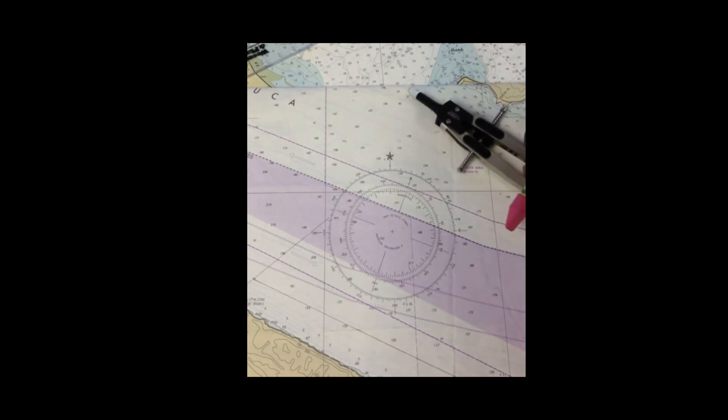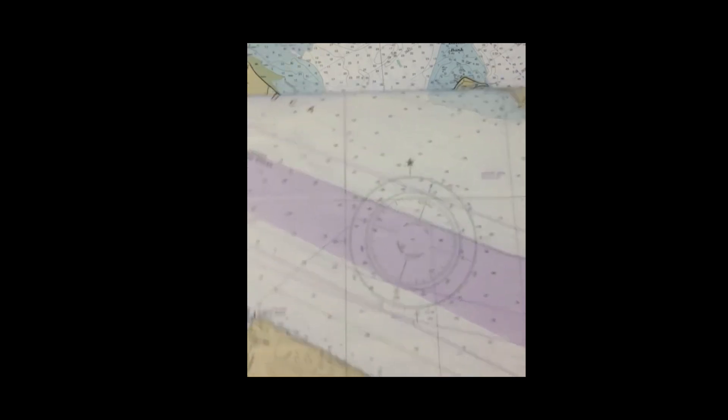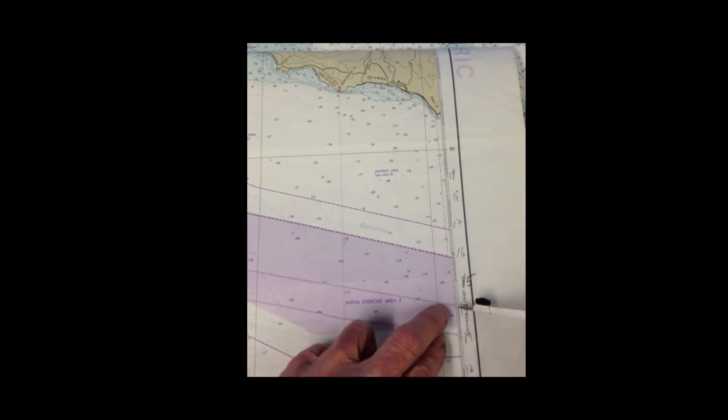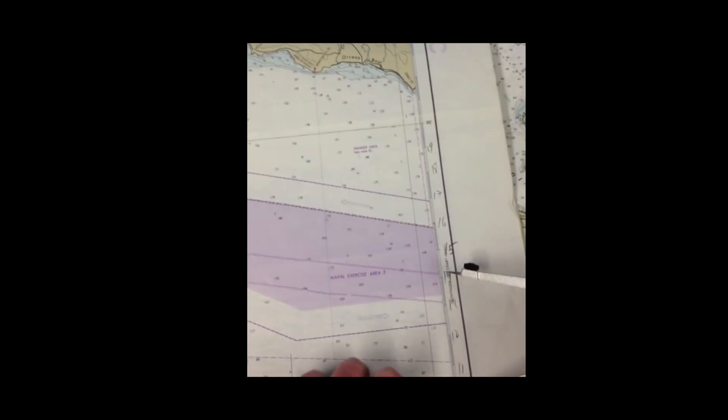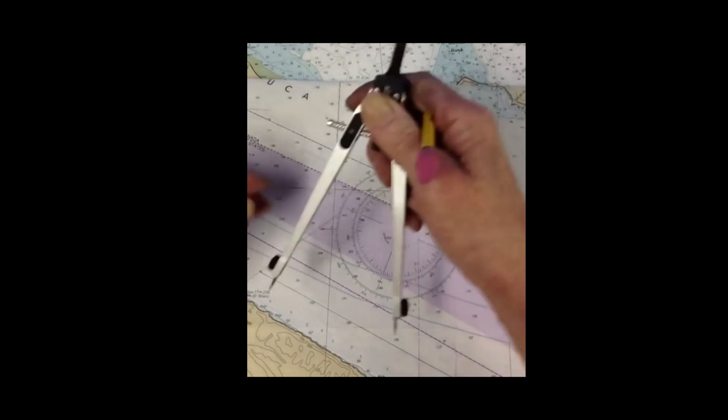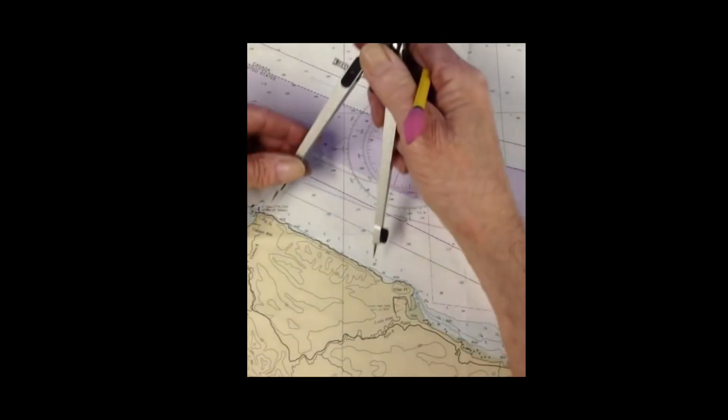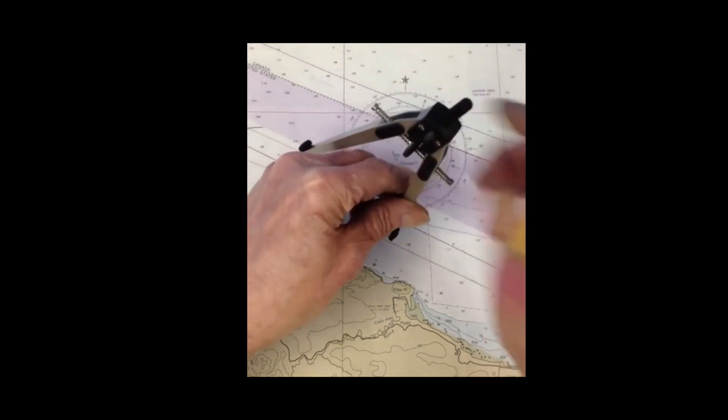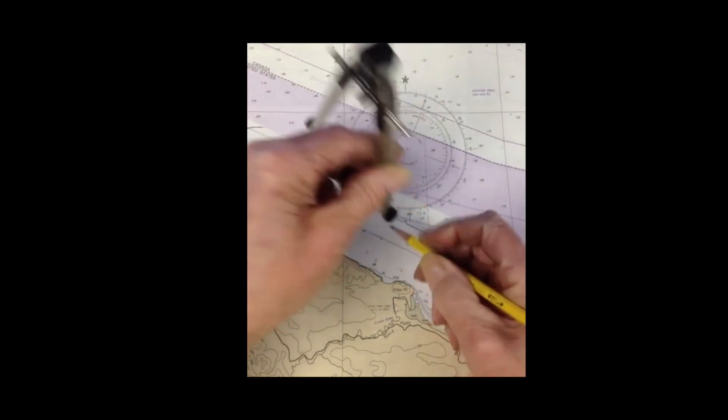Now we need the distance here, 4.5 nautical miles. I go back to my scale. 1, 2, 3, 4, 4.5. Then I come back to the picture and put that there and there. And there's my position at 4.5.